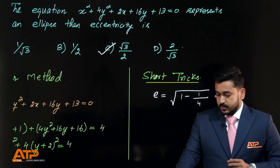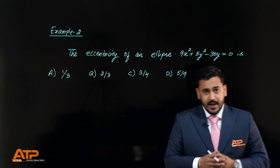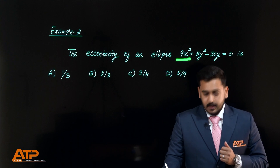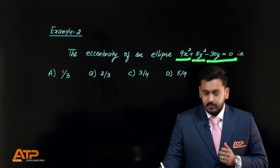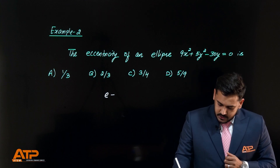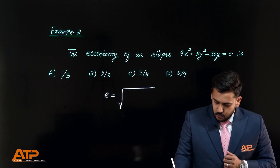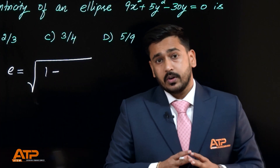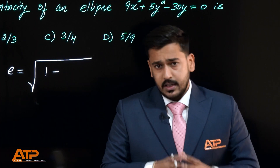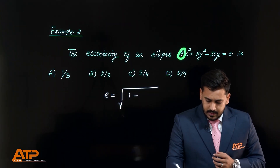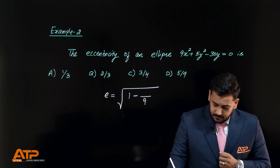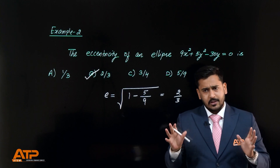Let's look at another example. We have to find the eccentricity of an ellipse whose equation is 9x² + 5y² - 30y = 0. Applying the formula: which coefficient is more, x² or y²? Yes, the x² coefficient of 9 is more, so it goes in the denominator and the y² coefficient of 5 goes in the numerator. So the answer will be 2/3 — option B.